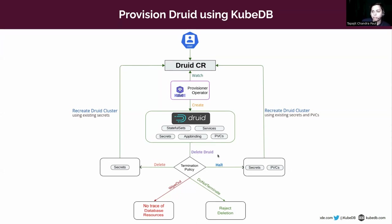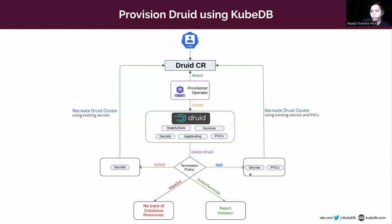KubeDB offers four termination policies for Druid. The first is 'Halt' — when you delete the cluster, the operator won't delete the secrets and PVCs, so you can recreate the cluster from them. 'Do Not Terminate' prevents any unexpected deletion of the database — the deletion will be rejected. 'WipeOut' wipes everything out, leaving no trace of the database. The default termination policy, if none is specified, is 'Delete', which keeps the secrets in the cluster so you can recreate the Druid cluster from those secrets.